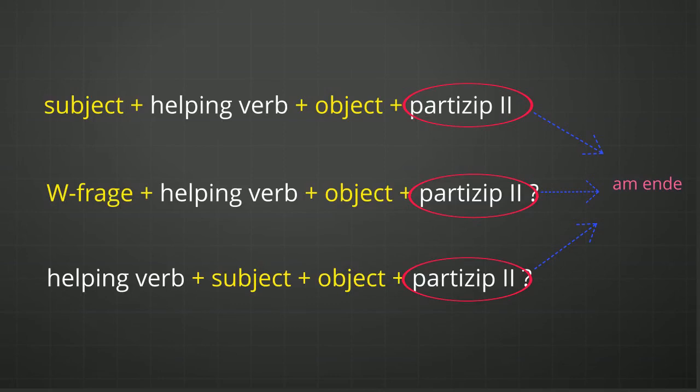Let us understand sentence construction. Sentence construction is like simple present tense sentence construction — here you only have to add the helping verb. If you are writing a normal sentence, the subject is at first position. Second position will be the helping verb, either Haben or Sein verb in conjugated form.